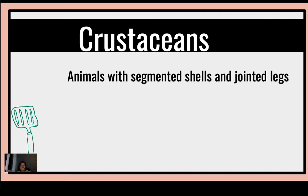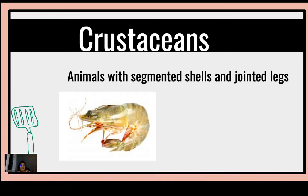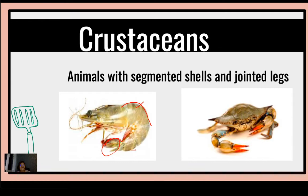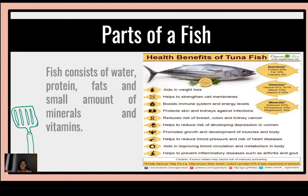Crustaceans are animals with segmented shells and jointed legs. These are the outer shells, and these are their legs — the body is joined by the shell and the legs. Examples are the shrimp and the crab. These are called crustaceans.